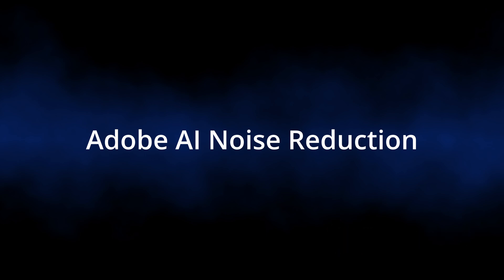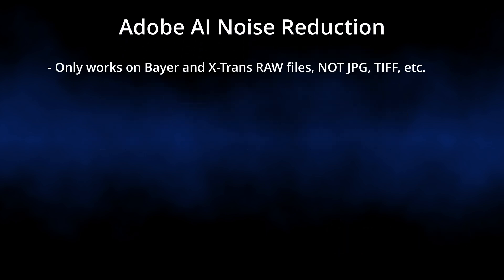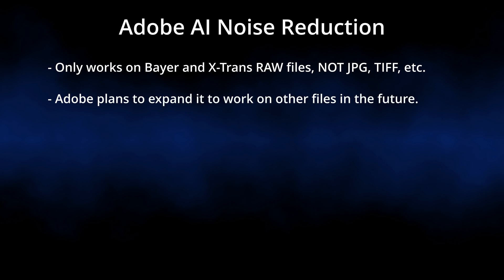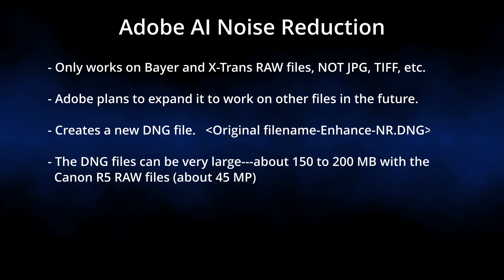Before we look at some photos I wanted to mention a few caveats. First of all, the noise reduction only works on Bayer and X-Trans RAW files, not on JPEG or TIFF or other formats. Adobe does have plans to expand it to work on other files in the future. The noise reduction process creates a new DNG file with "-enhance-nr" appended to the file name.